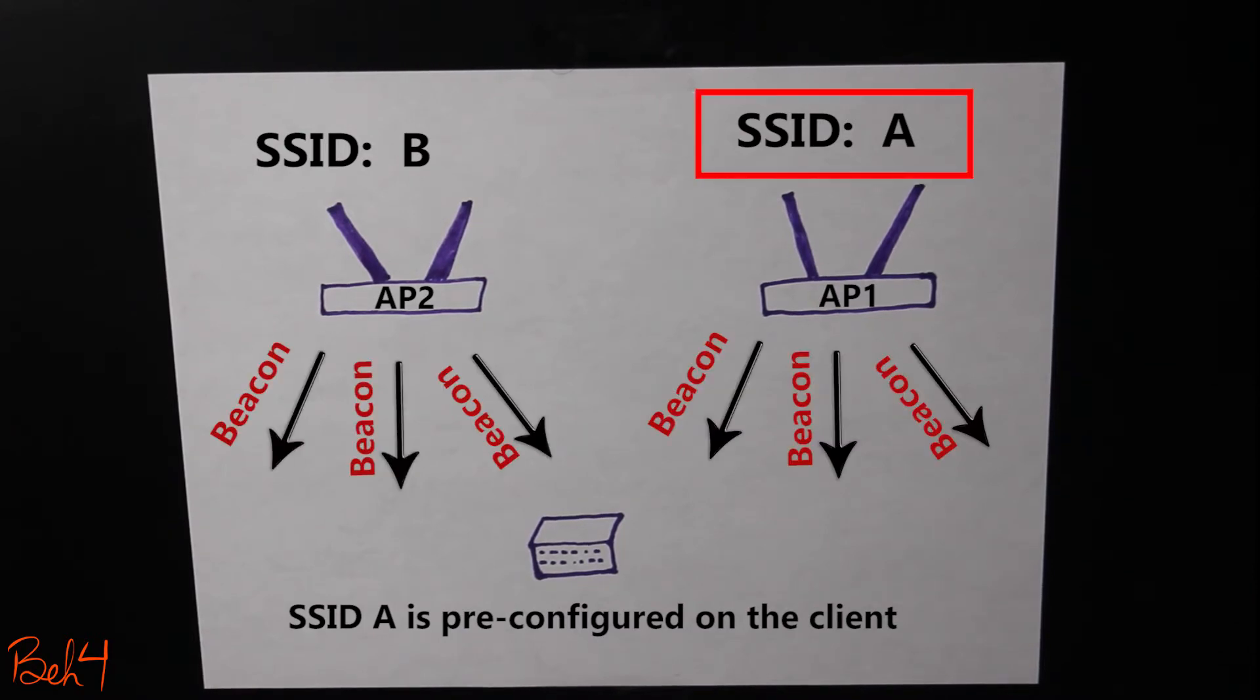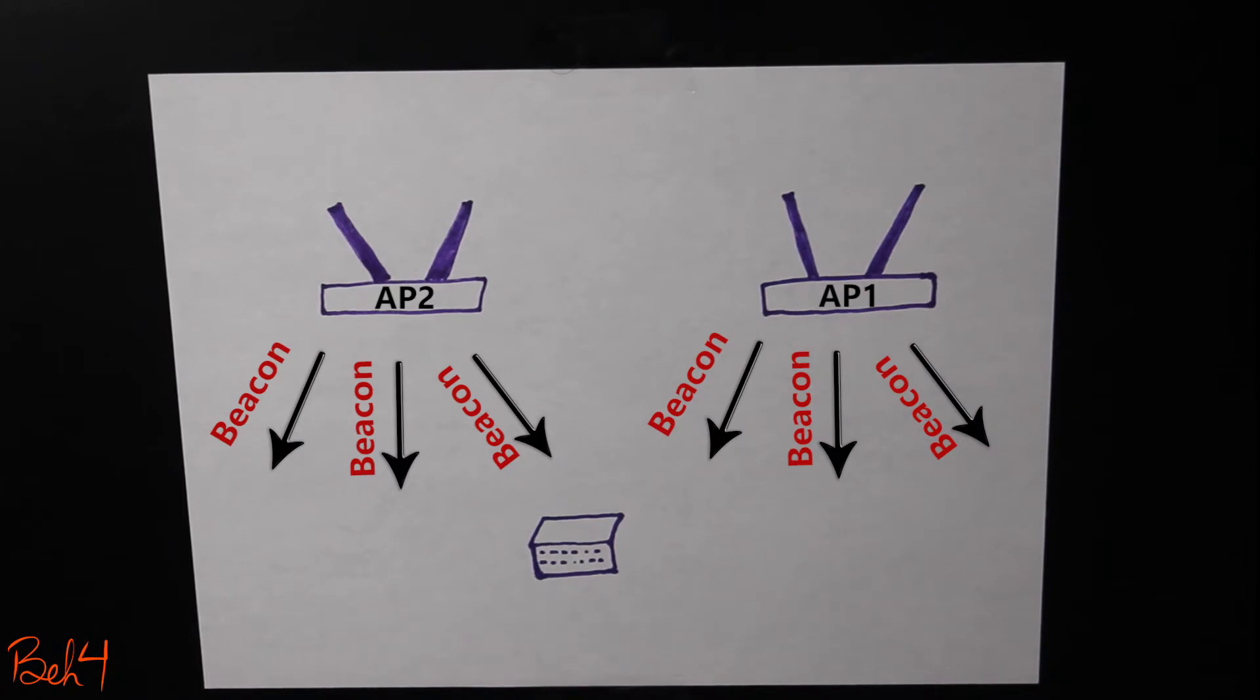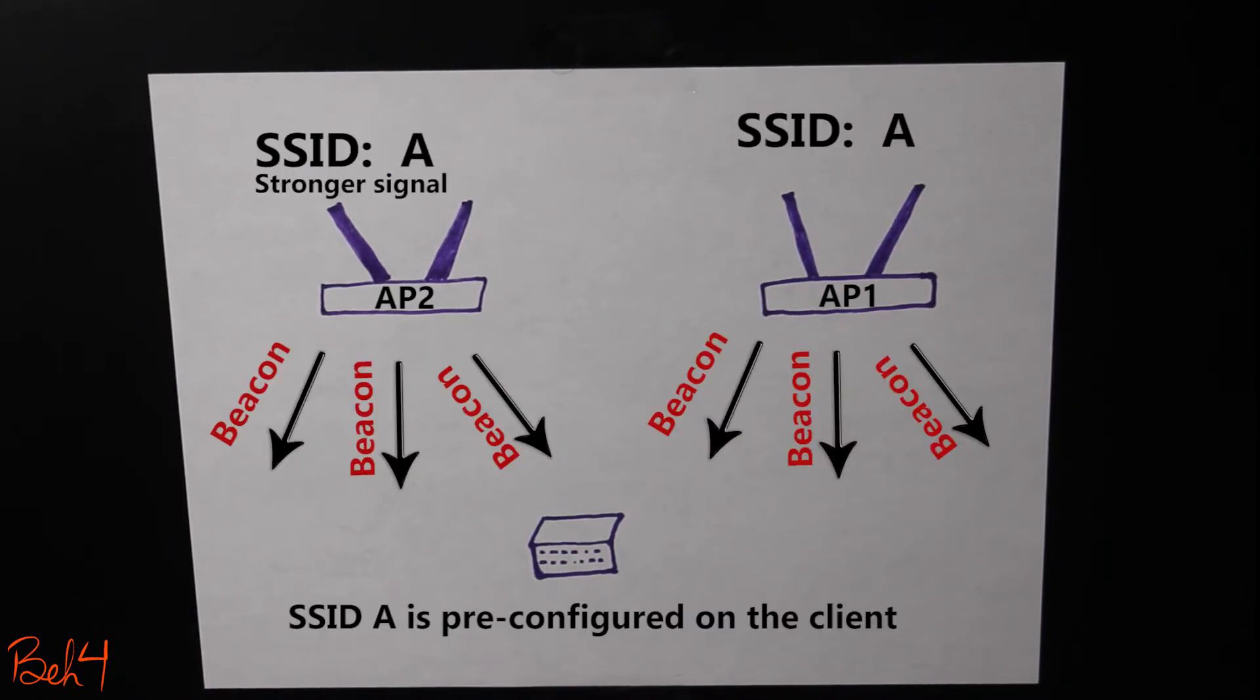The client is going to choose the access point with the right SSID name. And in case there are multiple access points with the same SSID, it will choose the one with the stronger signal.